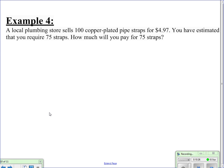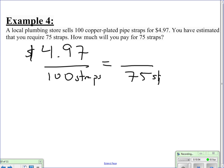A local plumbing store sells 100 copper plated pipe straps for $4.97. You have estimated that you require 75 straps. How much will you pay for 75 straps? So, again, let's set this up. It's going to cost us $4.97 and that's for 100 straps. Now, in this case, we only need 75 straps. x is going to be equal to cost of straps.